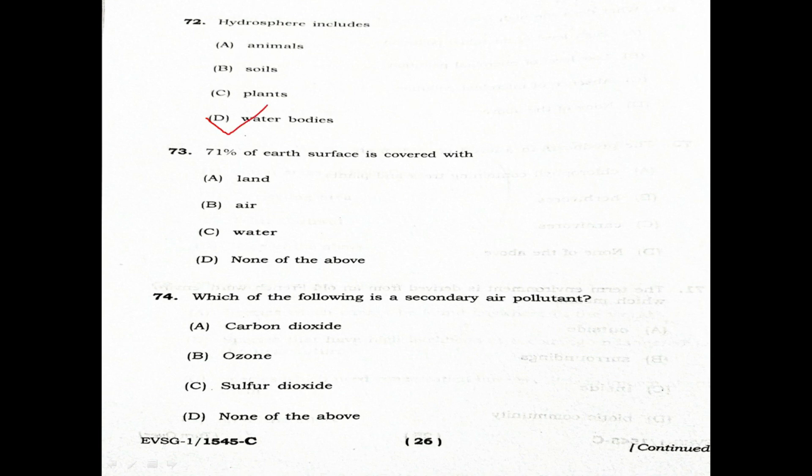Question 72: Hydrosphere includes. Option A: Animals. Option B: Soils. Option C: Plants. Option D: Water bodies. Hydrosphere includes water bodies. D is the correct answer.